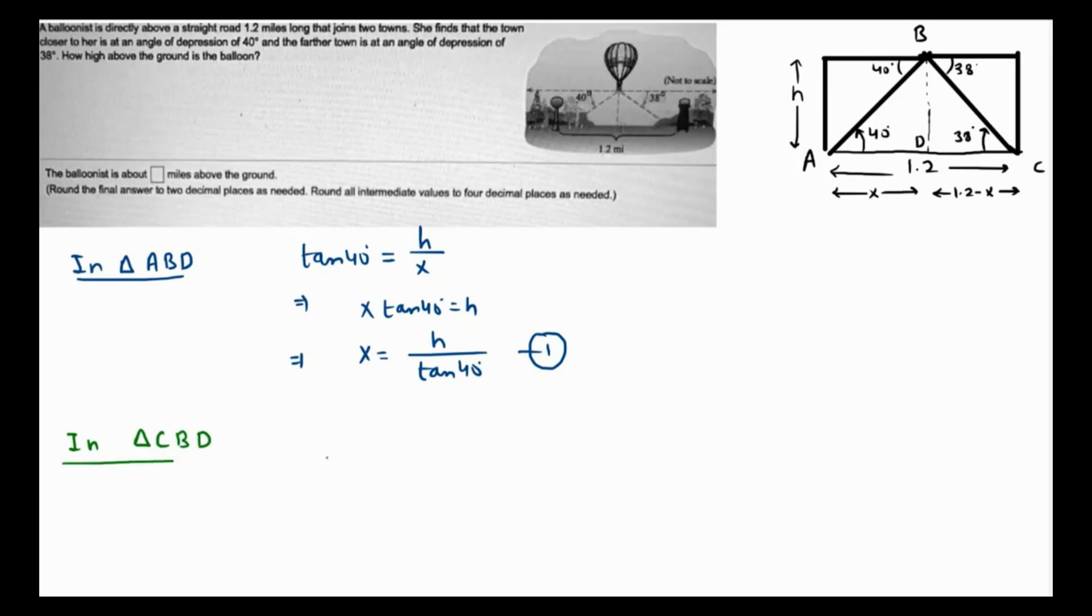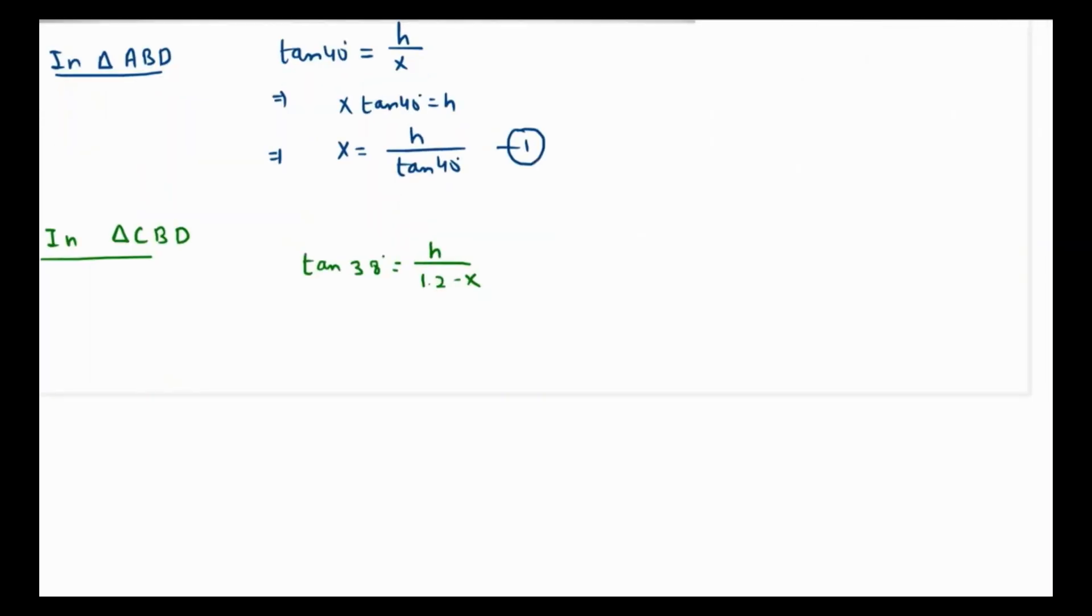In triangle CBD, tan of 38 degrees is going to be opposite, which is h, over adjacent, which is 1.2 minus x. If we cross multiply, this is 1.2 minus x times tan of 38 is h. If we distribute this, it's 1.2 tan of 38 degrees minus x tan of 38 degrees equals h. The value of x is something we can substitute now from equation 1.